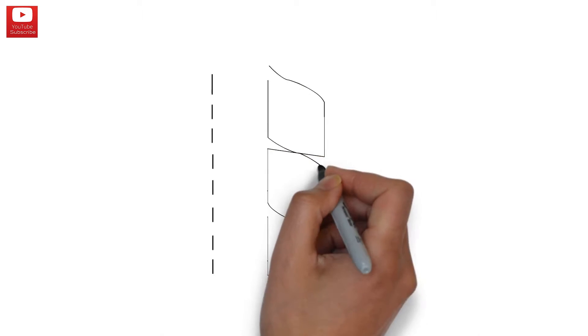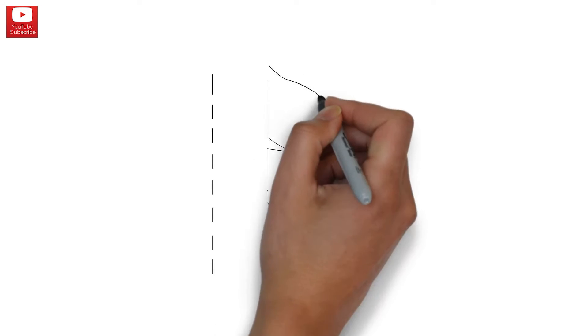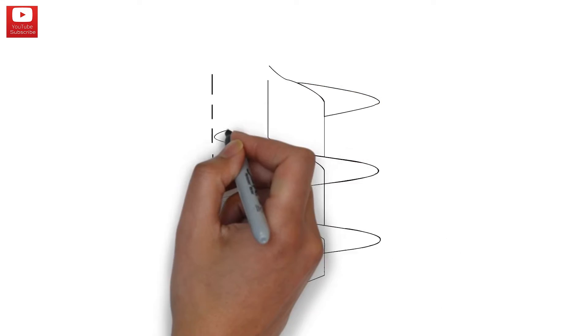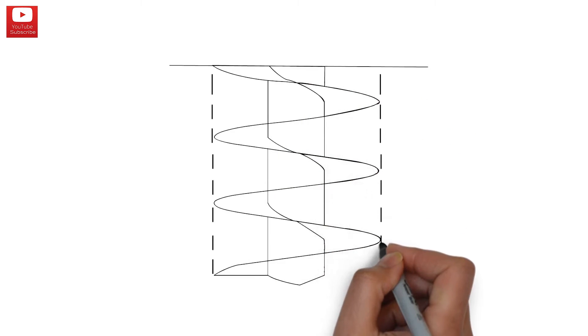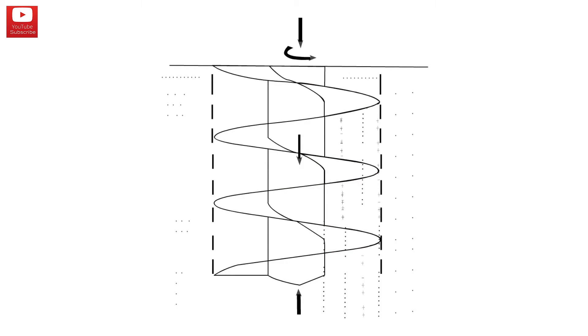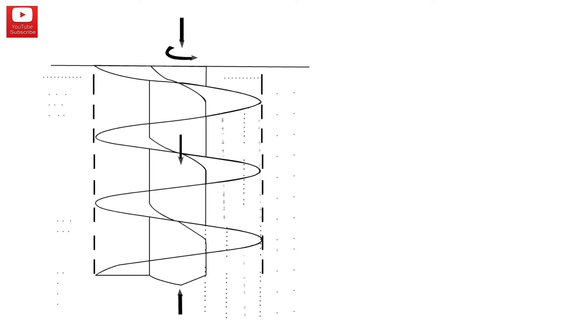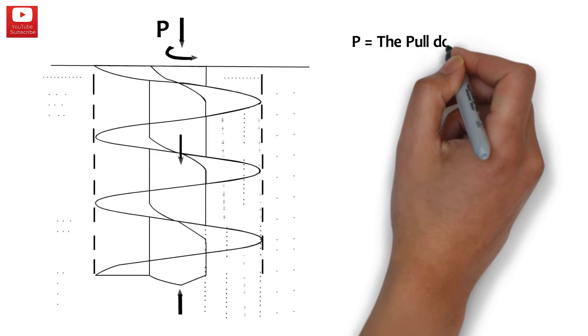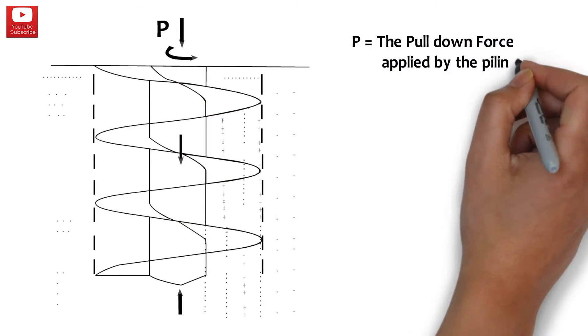Hello piling friends, in this episode we'll talk about the forces acting on the auger during the drilling process, as well as other parameters applied to the continuous flight auger. P equals the pull-down force applied by the piling rig.